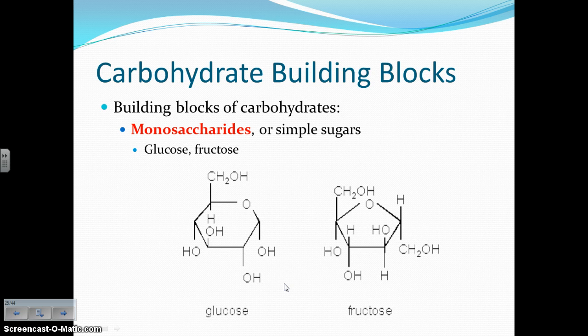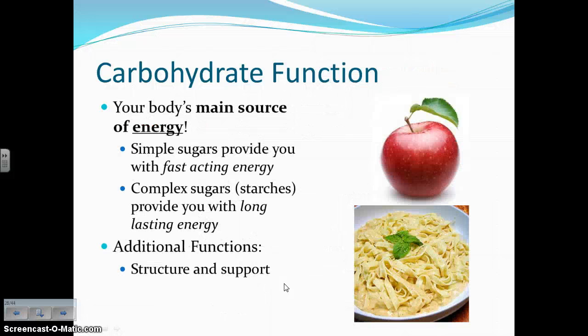Simple sugars like glucose and fructose get put together, repeated over and over until they form a macromolecule carbohydrate, like cellulose, or something you would find in a starch like a potato or a grain. So the building blocks are these simple sugars, monosaccharides.